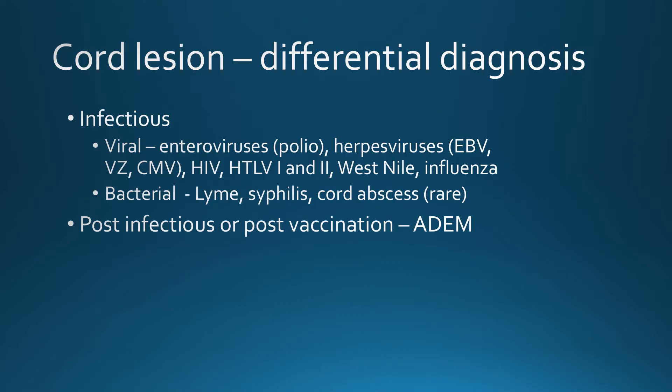When we see a spinal cord lesion, we need a differential diagnosis. Infectious causes include direct infection — the classic is poliovirus, though we don't see polio anymore. Other enteroviruses and West Nile virus can cause infectious myelitis. Bacterial infections such as Lyme disease and syphilis — tertiary form tabes dorsalis involves the spinal cord — and pyogenic cord abscess, which is rare.